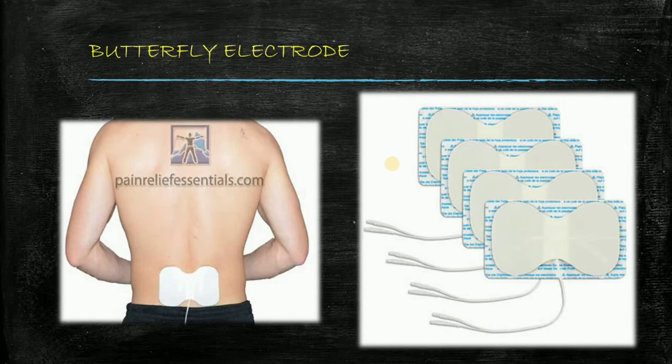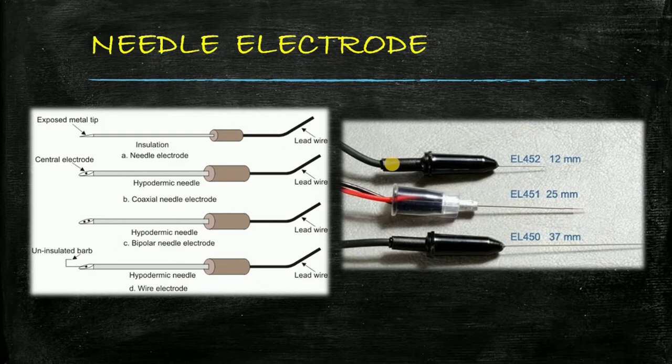Next is needle electrode. Needle electrodes are used in EMG studies to record single motor unit potential from the different parts of a muscle. Different types of needle electrodes are available like concentric, monopolar, bipolar. You can see in this picture there are various type of needle electrodes present.